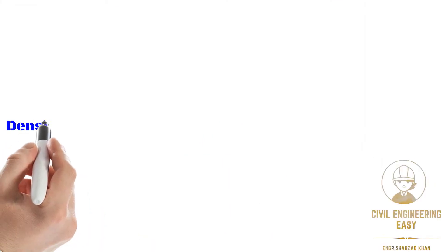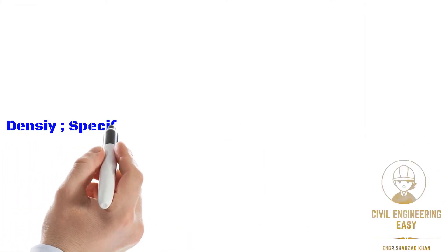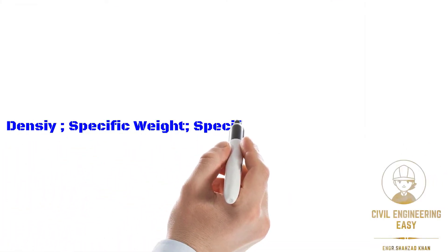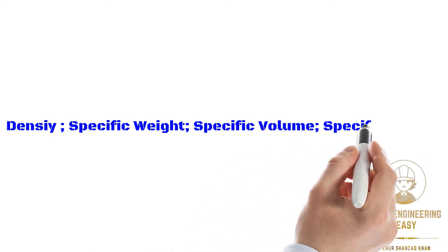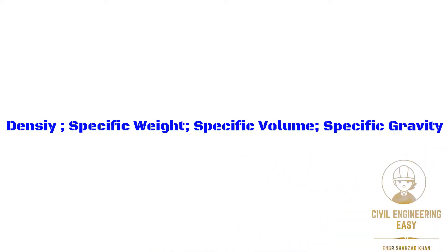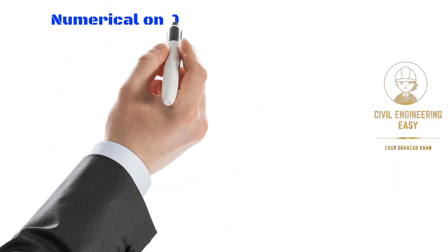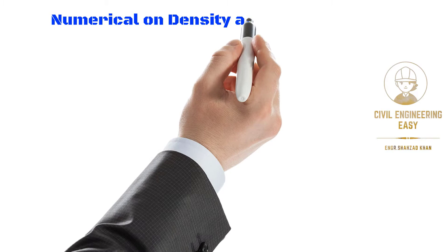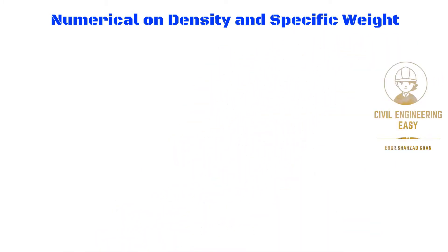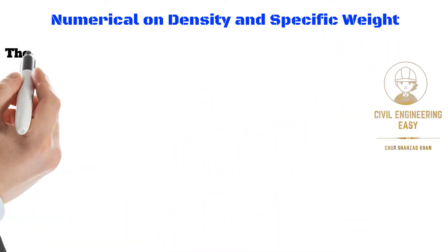In the last two videos, we have learned about density, specific weight, specific volume, and specific gravity. The link of the related videos are in the description part of this video. In this video, we are going to solve a numerical example related to density and specific weight. Let's get started.